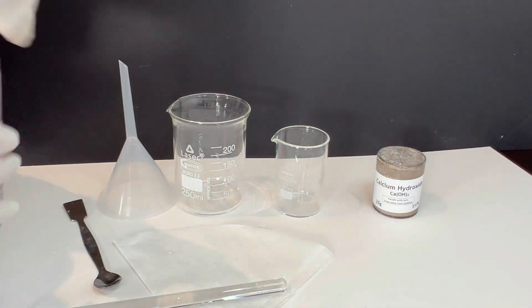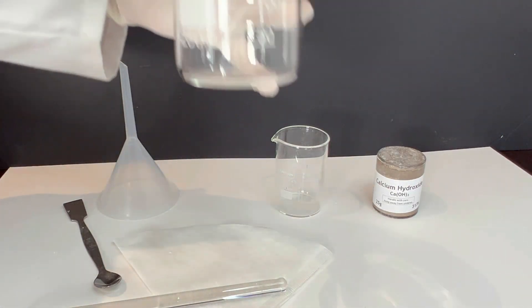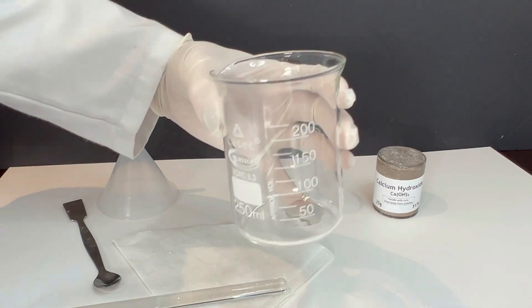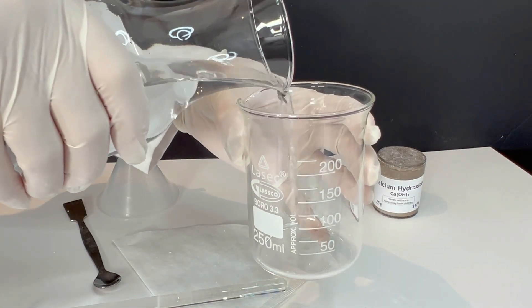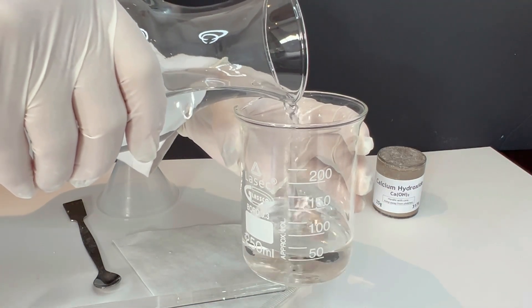Take a clean beaker and add about 100 milliliters of water. Then after that, add about one spatula of calcium hydroxide powder.